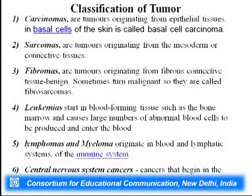How do I classify different cancers? Carcinomas originate from epithelial tissue — a basal cell carcinoma comes from the basal cell of the epithelium. Sarcomas are tumors originating from the mesoderm or connective tissue. Anything to do with blood becomes leukemia. Fibromas originate from fibrous connective tissue and are generally benign, meaning not fatal to life, but fibromas may also turn malignant and cause death of the organism.